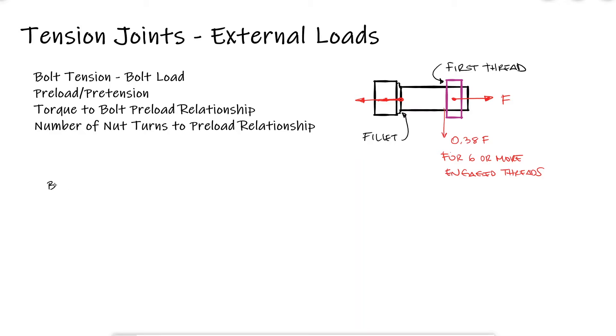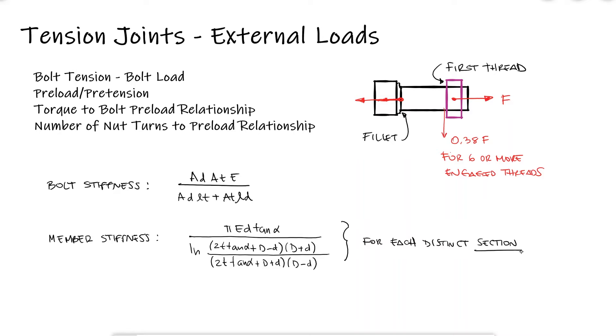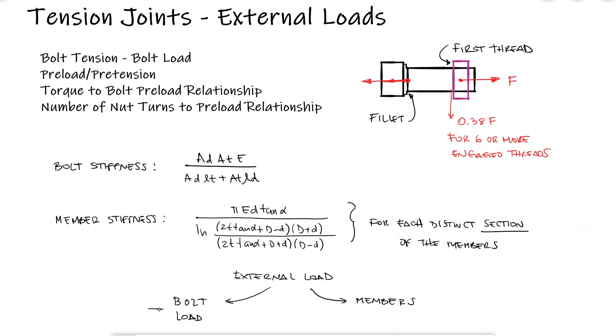During the previous main video, we developed expressions to estimate the fastener stiffness and the member stiffness. We stated that the goal for doing this was being able to identify how much of the preload or any external load would affect the bolt and how much would affect the members. If we know how much of an external load actually goes into the fastener or bolt, we could develop some relationships to identify factors of safety for the fastener itself.